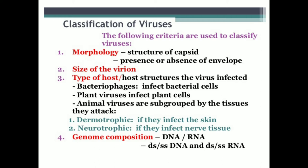The second category is plant viruses, which infect plant cells, so plant cells act as a host for virus development. The third category is animal viruses, which are subgrouped by the tissue they attack. They are reclassified as dermotrophic — viruses that infect the skin — and neurotrophic — viruses that attack nerve tissues.